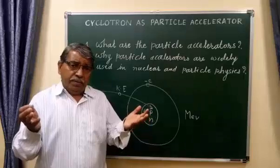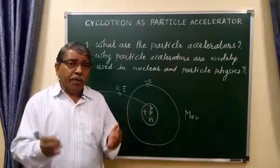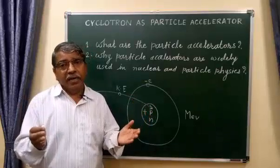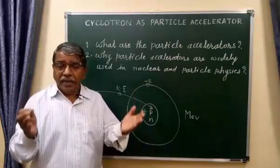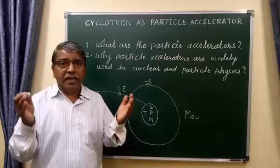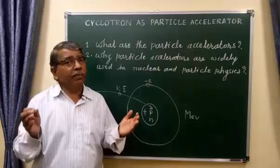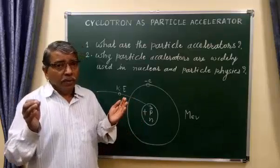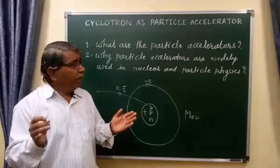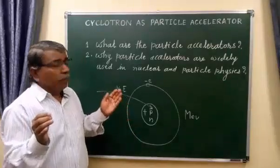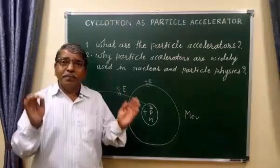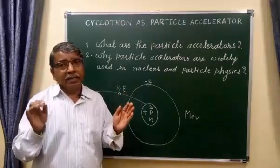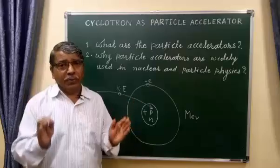There are types of accelerators such as linear accelerators, static accelerators, and circular type accelerators. I will explain one of the most important circular type accelerators — that is the cyclotron.